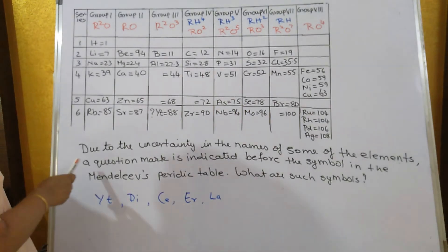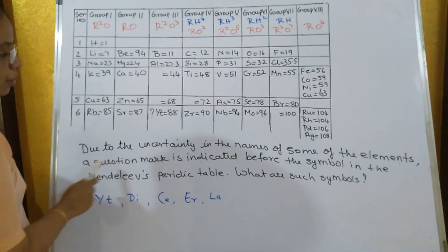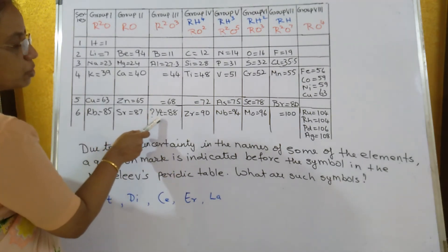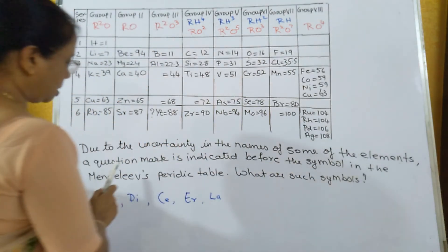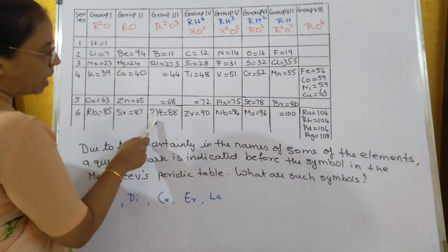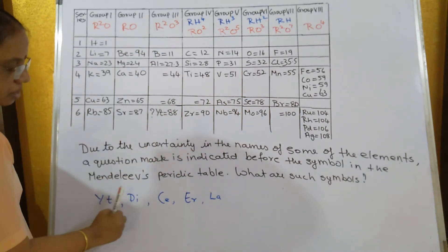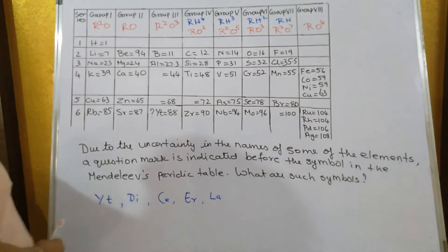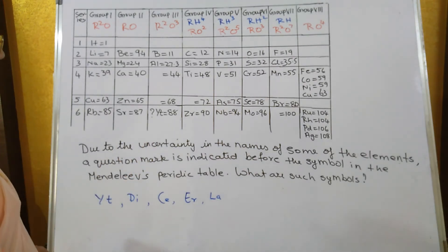On the same page, some elements have a question mark indicated before their symbol because Mendeleev was not sure about them. These elements include YT, DI, CE, ER, and LA. These elements were not known during his time, but yet he predicted their atomic mass and properties.